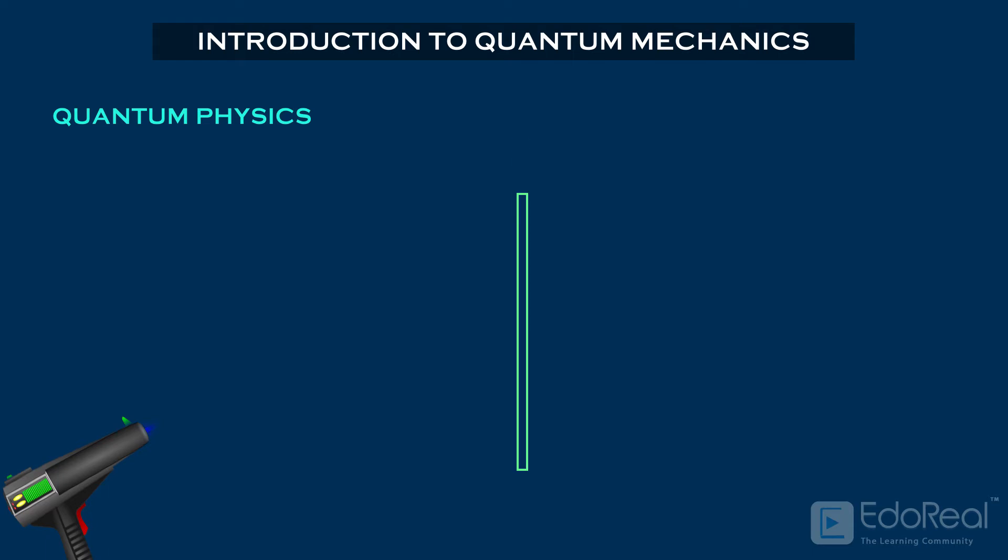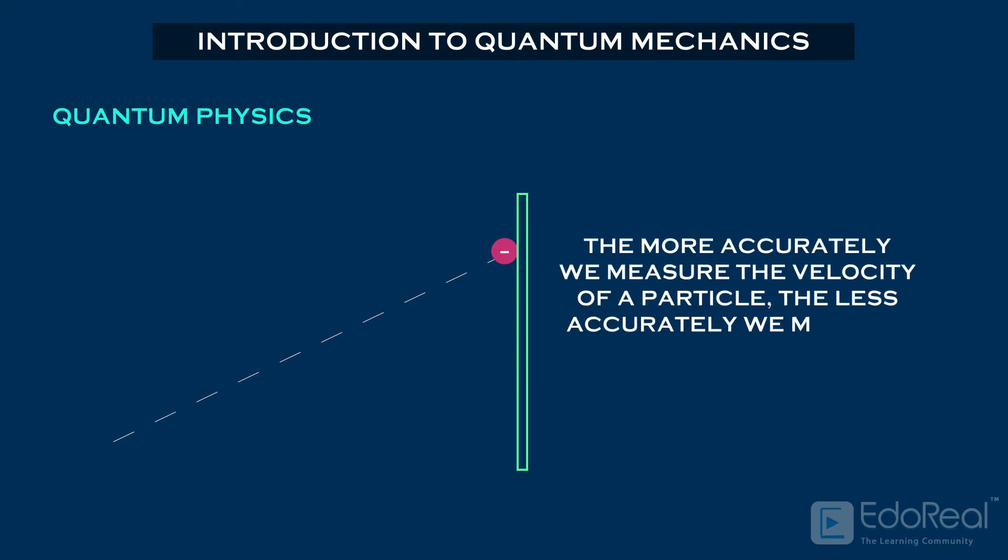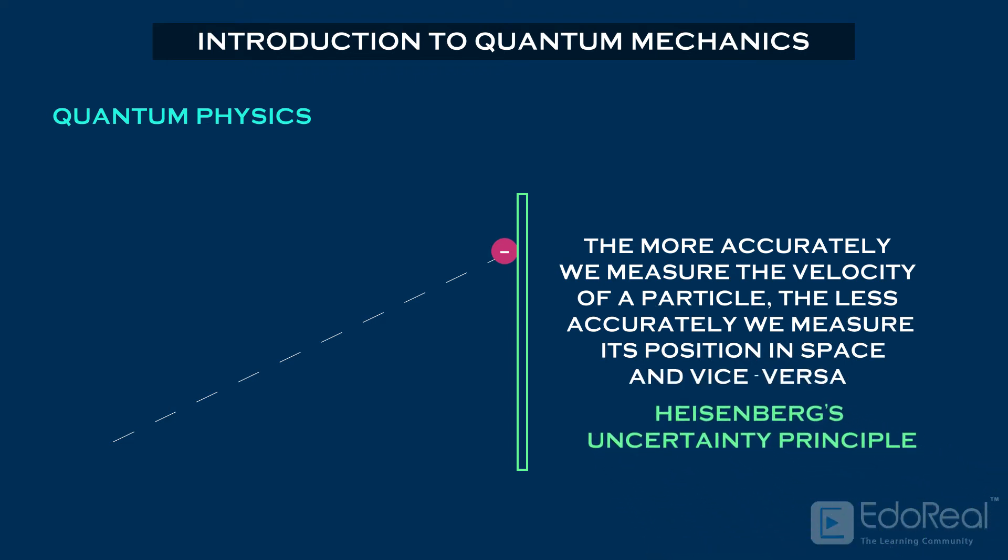For example, if we throw an electron into space, it is hard to find the position and momentum of an electron simultaneously with greater accuracy. If we find position, we cannot find momentum, and vice versa. That means the more accurately we measure the velocity of a particle, the less accurately we measure its position in space, and vice versa. This is called Heisenberg's uncertainty principle.